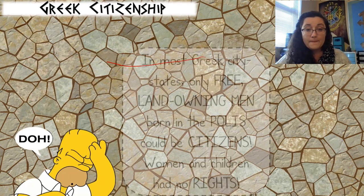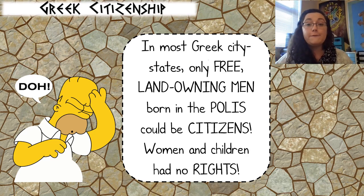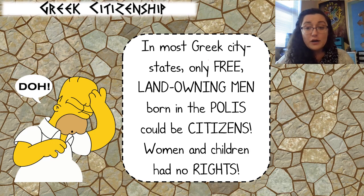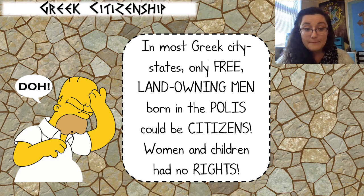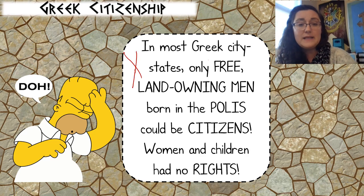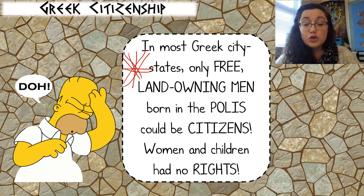It's important to understand that in most Greek city-states, only free, land-owning men born in the polis could be citizens. Women and children had no rights. If you were a foreigner, you had no rights. If you were born a slave, even if you became free later, you had no rights. This was not the idea of citizenship that we have today. Go back and double check your notes, and put a big star by citizenship — it's different in Ancient Greece than it is in the United States.